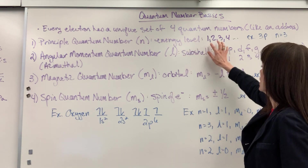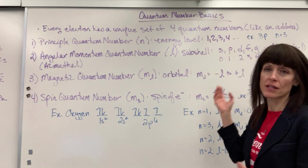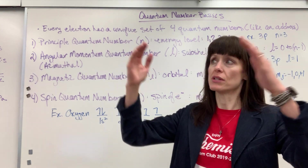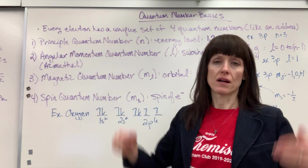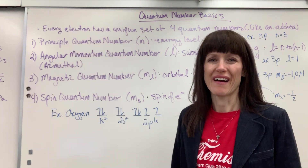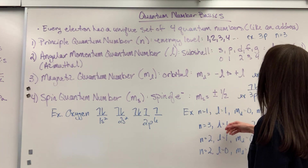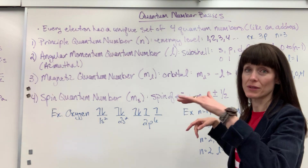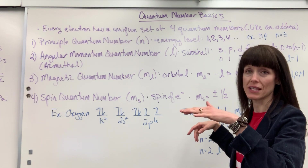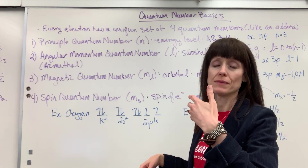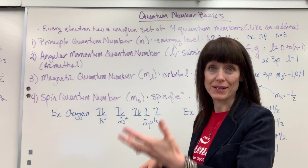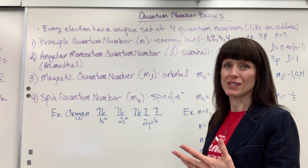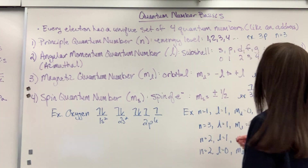Energy level is one, two, three, four — infinite. We have an infinite number of energy levels inside of an atom. On the periodic table it goes up to energy level seven, but we're creating more atoms through transmutation, so there's an infinite number.